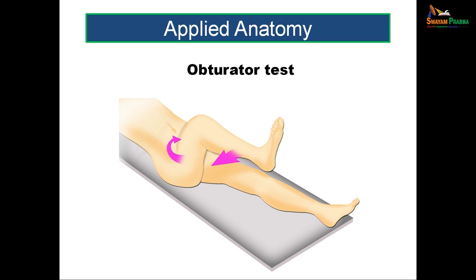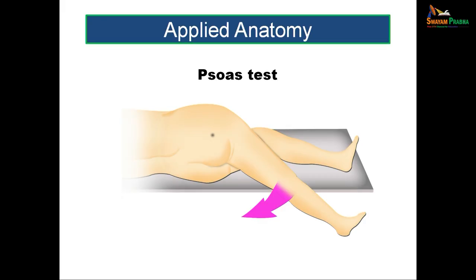The obturator test: flexion and medial rotation of the leg causes excruciating pain due to irritation of the obturator internus, which is related to a pelvic appendix. The obturator test is positive when the appendix is of the pelvic type, while the psoas test is positive for the retrocecal type.